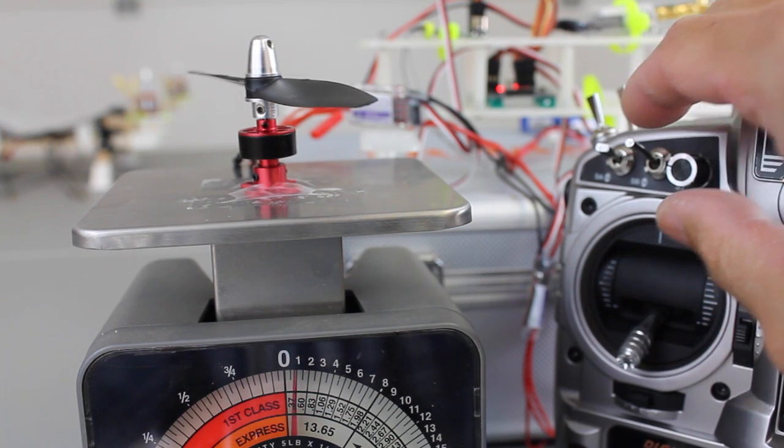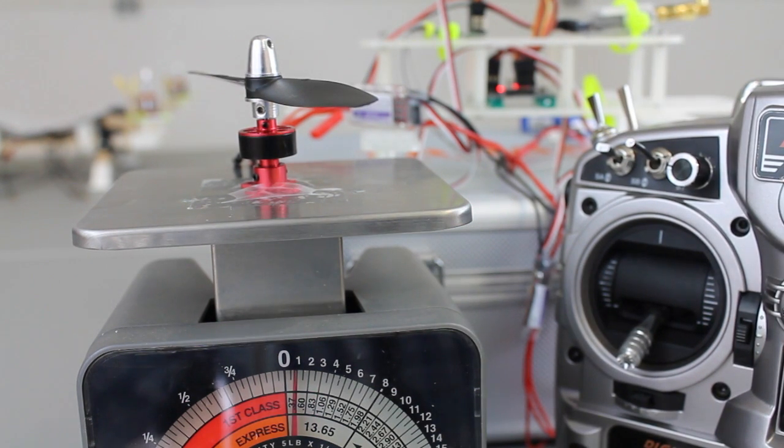We'll just call that three ounces. That's about 90 to 100 grams of thrust per motor. So anywhere from 360 to 400 grams of thrust total.